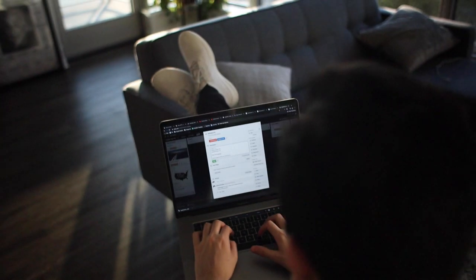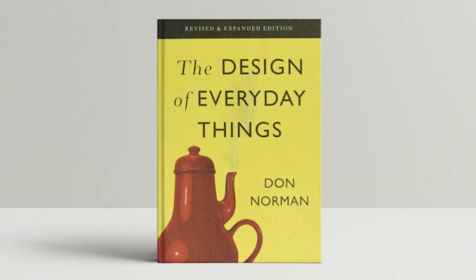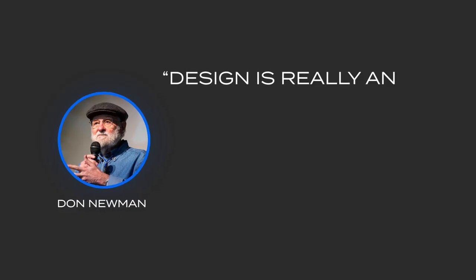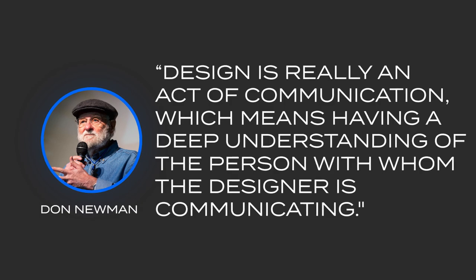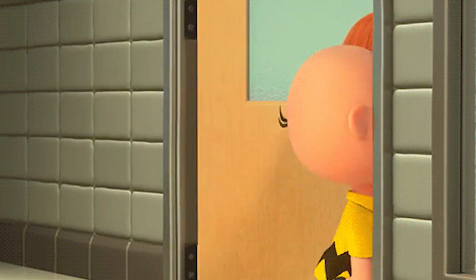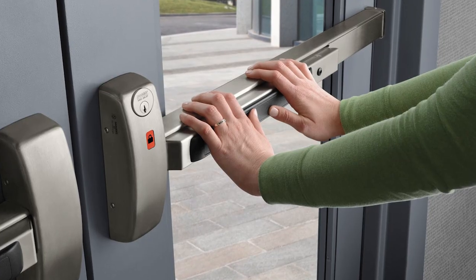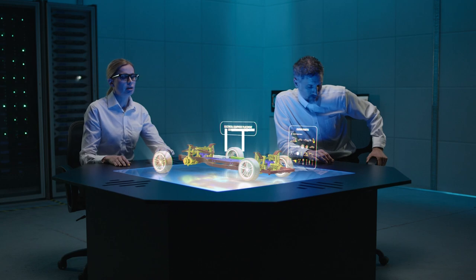I think we can actually all agree that this is an example of bad design. This is called a Norman door, named after Don Norman, design guru and author of The Design of Everyday Things. Don describes design as an act of communication, which means having a deep understanding of the person with whom the designer is communicating. Door designs with these handles communicate pull, and doors with this design communicate push. So put simply, design is not simply how something looks — it's how it works.